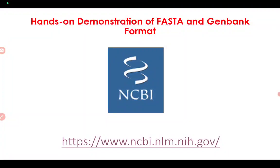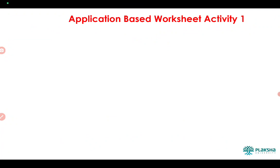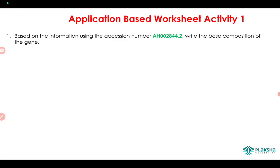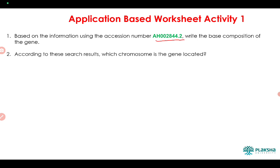This completes the hands-on demonstration for FASTA and GenBank formats. Now here is an activity. Based on accession number AH002844.2, which I showed for insulin, you have to find the base composition of that particular gene — meaning how many base pairs are present. Write your answer in the comment section. The second question: according to this search, on which chromosome is this gene located?